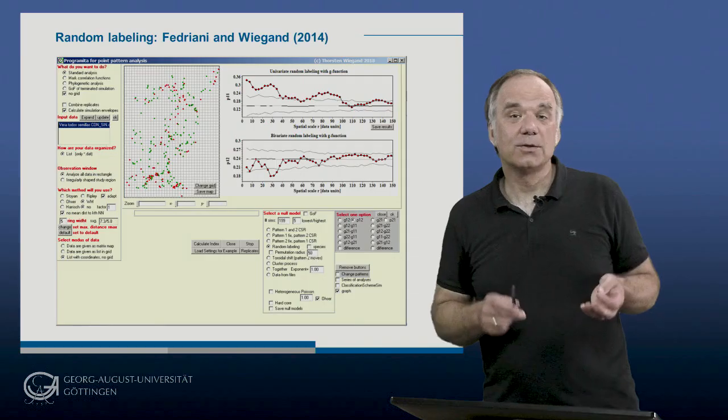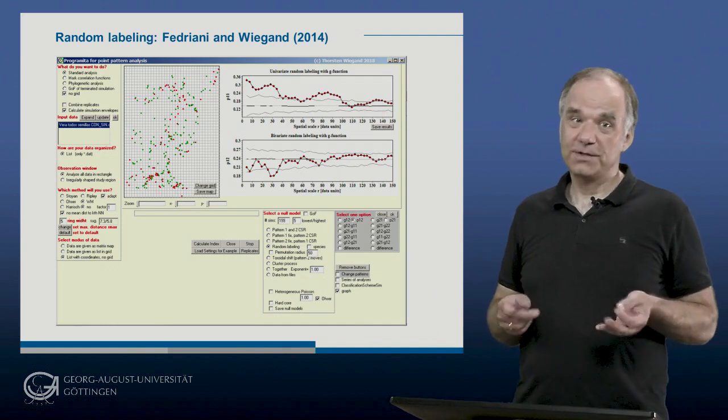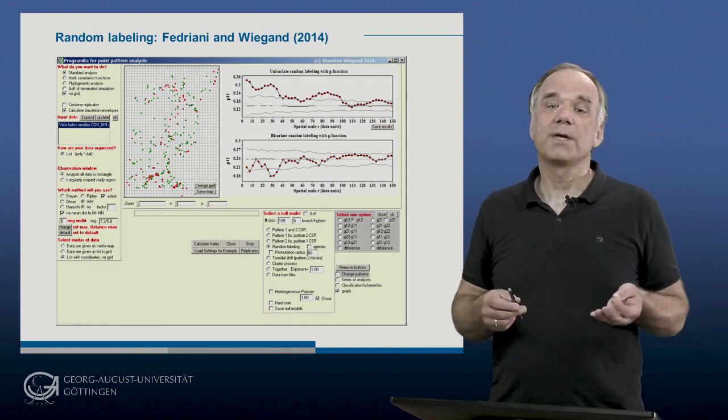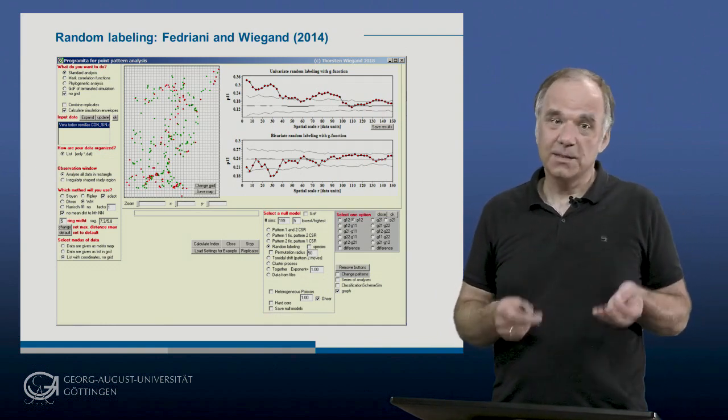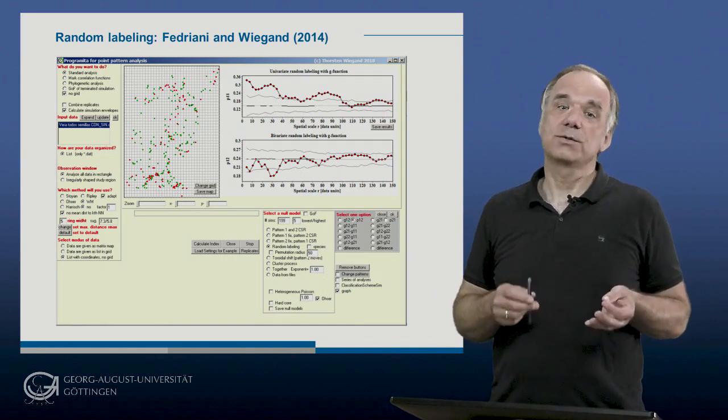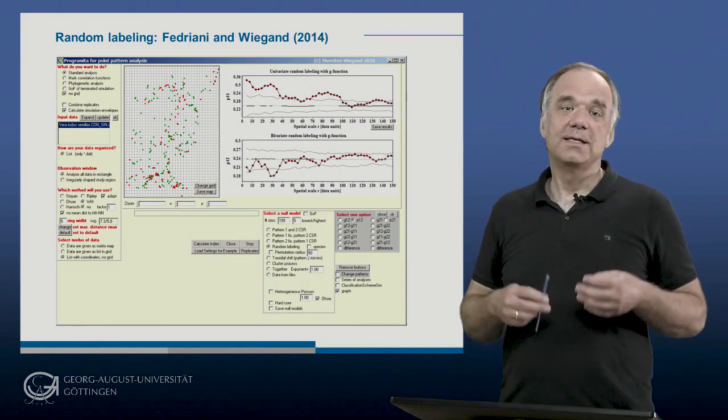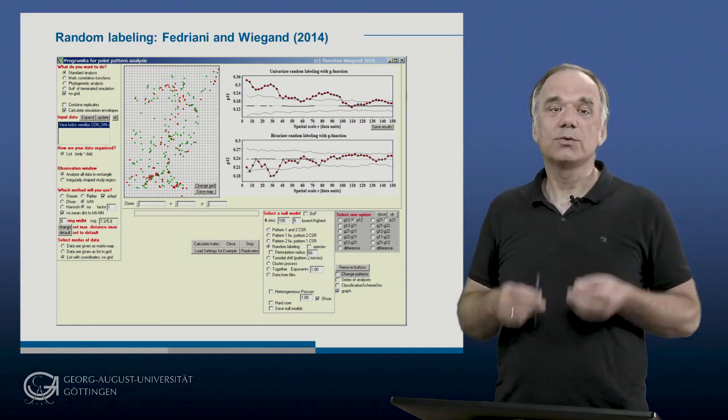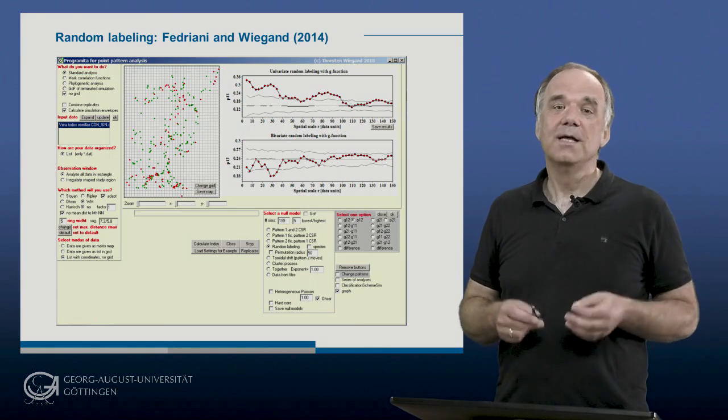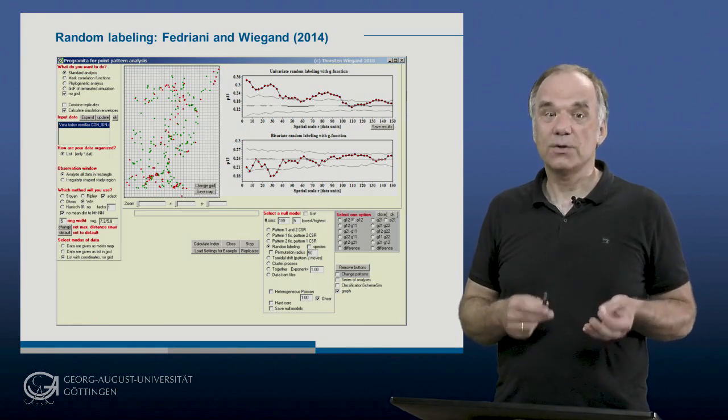Now we have all the theoretical knowledge to analyze José's data. We have the univariate pattern of the droppings of the animals, and the mark is droppings containing seeds versus droppings without seeds. In the next step, I will show you how to analyze this dataset using the Programmitter software. Thank you for your attention.